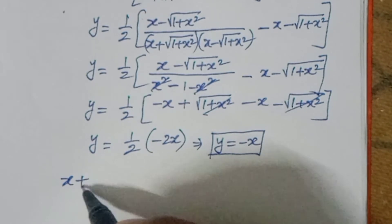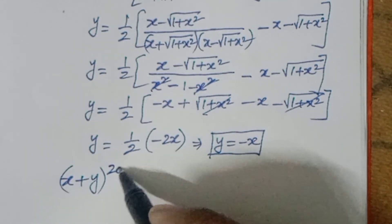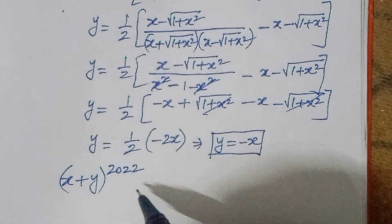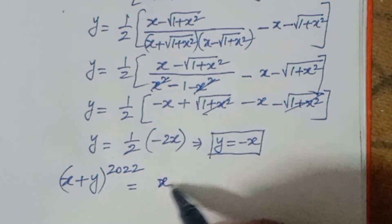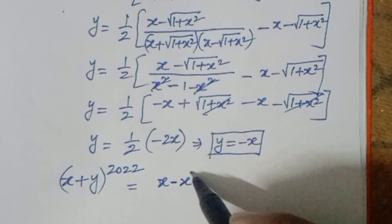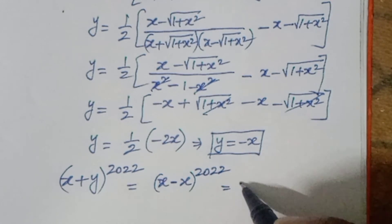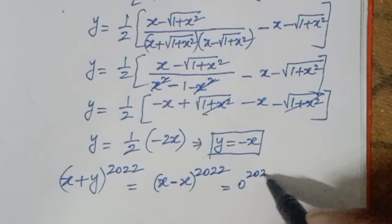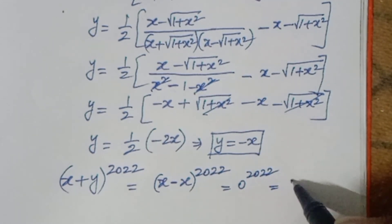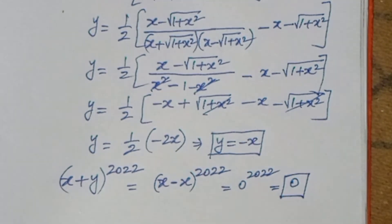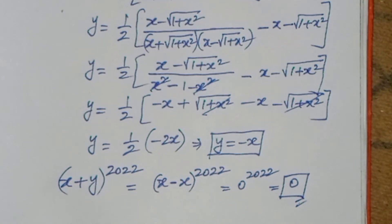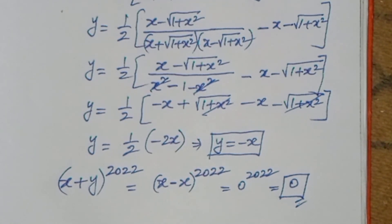So what is asked: (x + y)^2022. Replacing y with −x, we get (x − x)^2022 = 0^2022. Zero to the power of anything is 0, so the answer is 0. If you like the video, subscribe the channel and share it with your friends. Thank you for watching Ayaan CG Max.